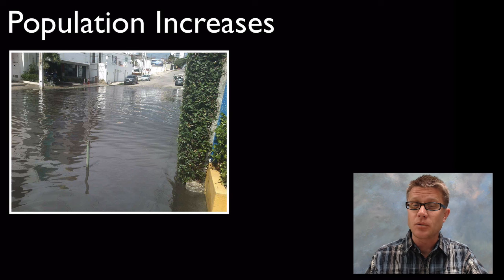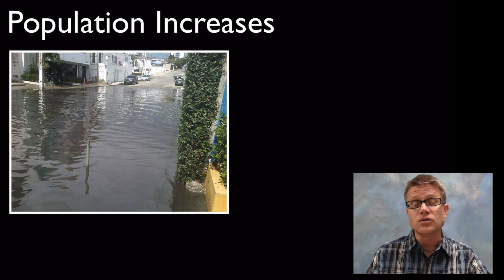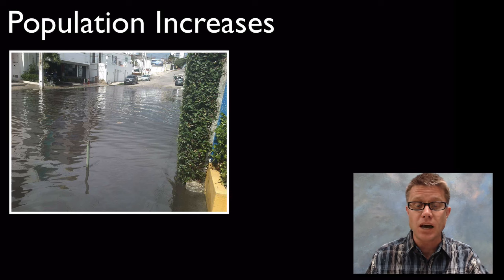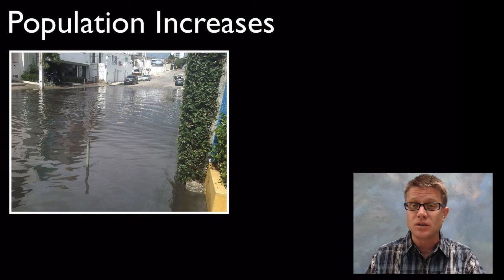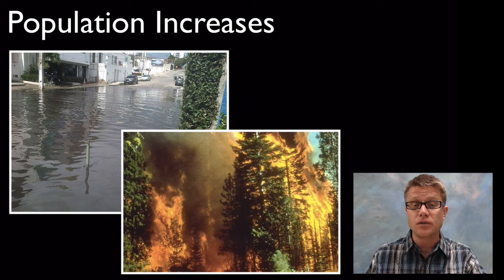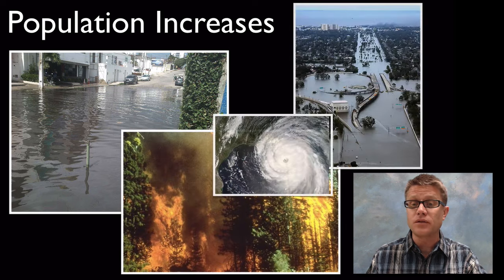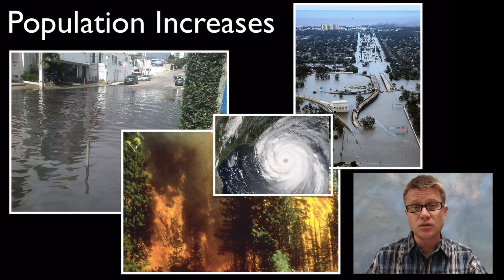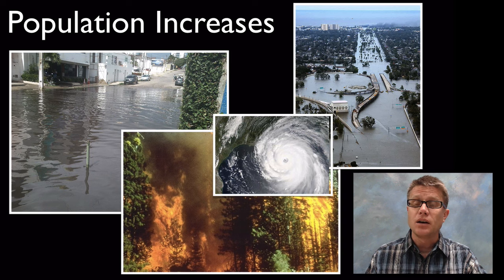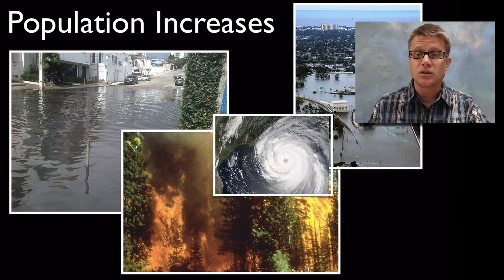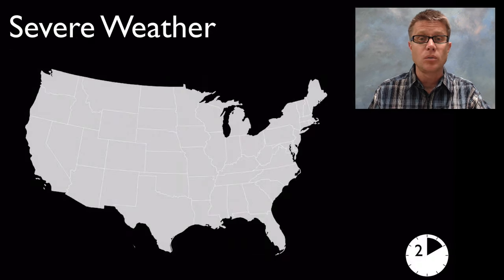As the population on our planet increases we're going to see more natural disasters as a result of these hazards — increases in damage due to flooding, wildfires, and hurricanes. Some of these may be increasing as we see increases in global temperature, leading to more severe storms. As we increase our population it's going to increase that damage double fold.